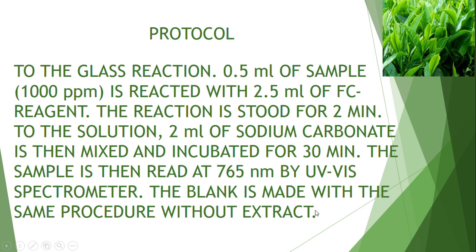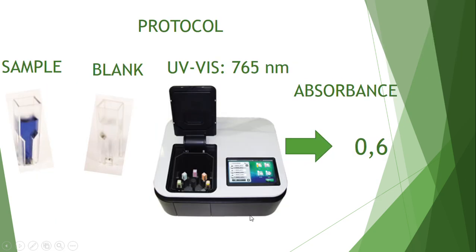The blank is made using the same procedure but without the extract. Here are the results. The sample has a dark color, while the blank has a white or clear color. We can measure both the sample and the blank in the UV-Vis machine at 765 nm. The blank is inserted first, and then we measure the sample.